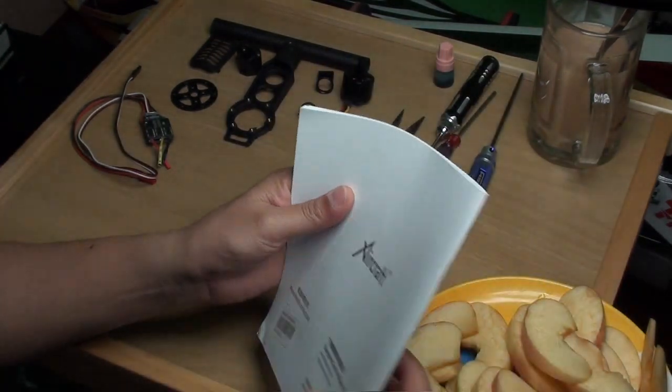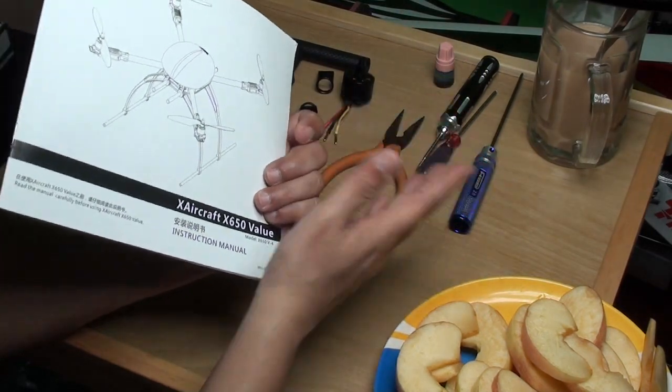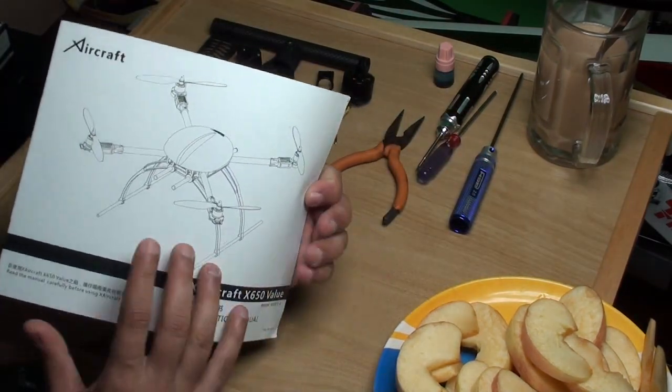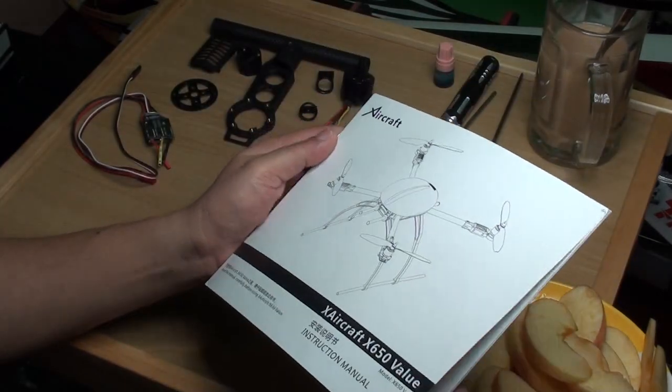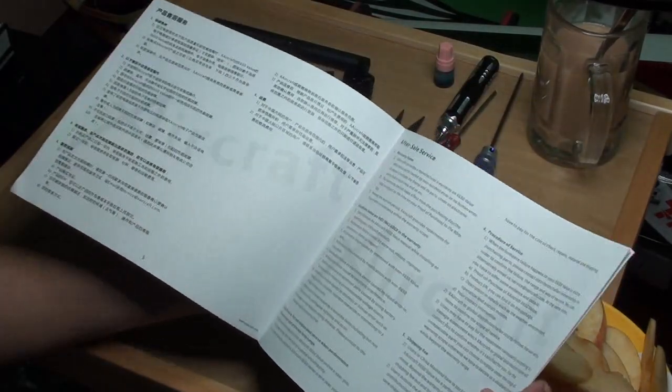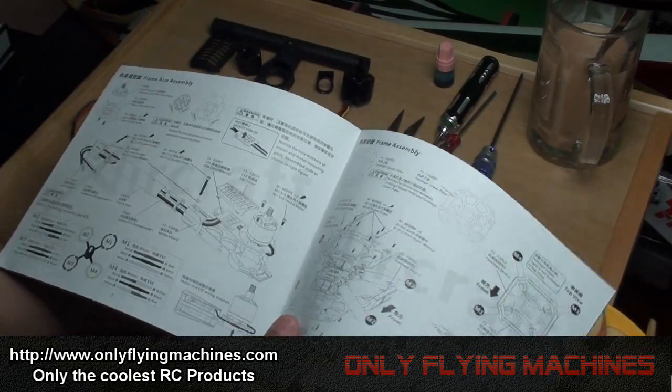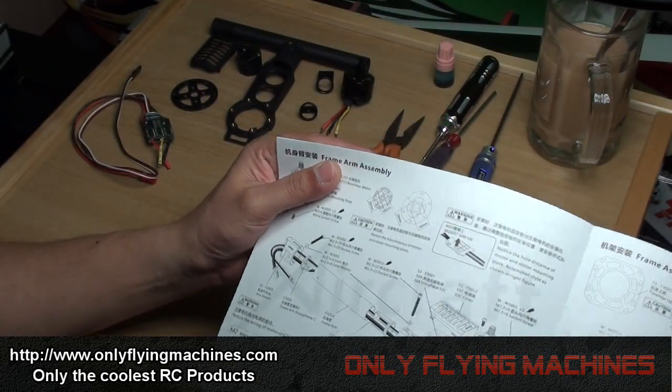First off, before you start assembling, get your coffee and tea ready, and get them apples ready. So here we are, starting with the X-Aircraft 650 value V4, X-650 V4 assembly. First off, I'm going to assemble the arm.